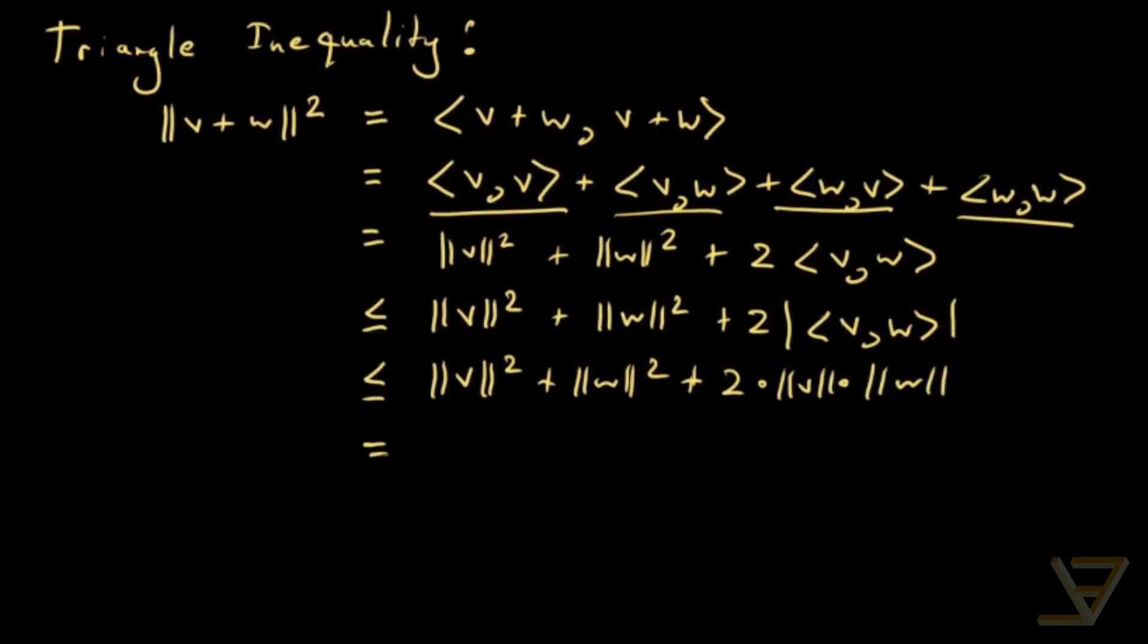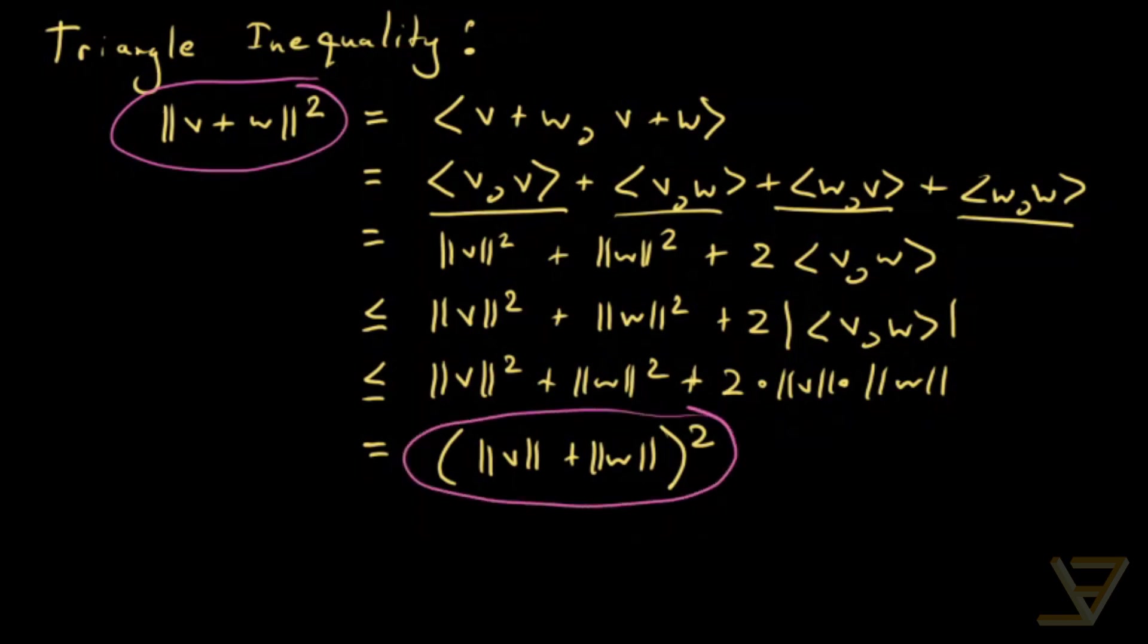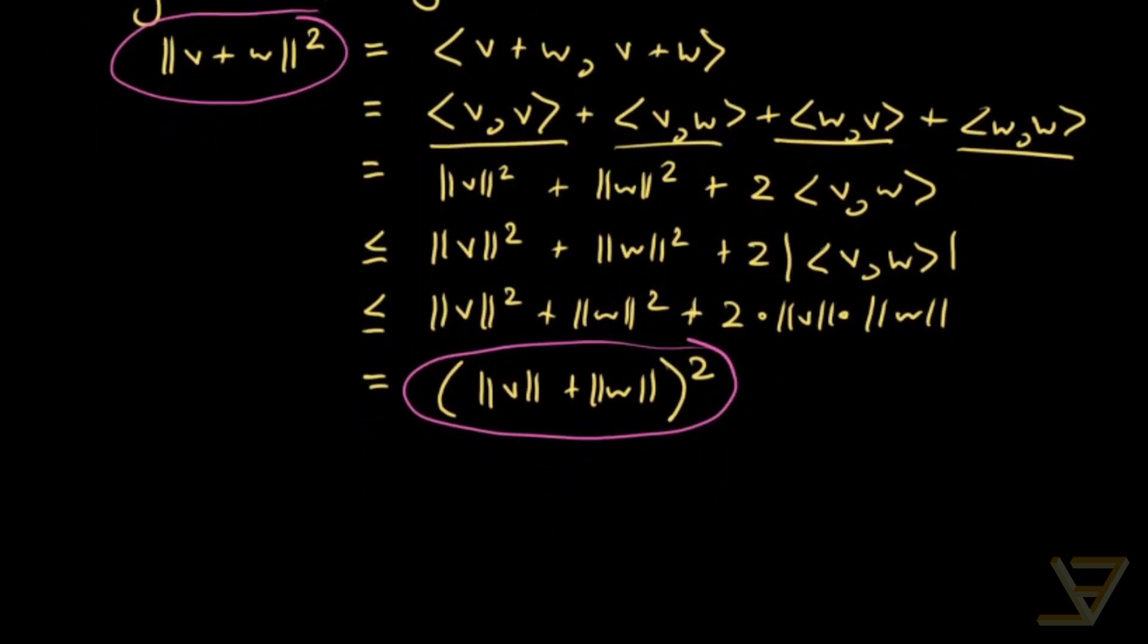Now we can use factorization. Together this is (||v|| + ||w||)². So we've got ||v + w||² on the left side and (||v|| + ||w||)² on the right side. We can conclude that ||v + w|| ≤ ||v|| + ||w||.